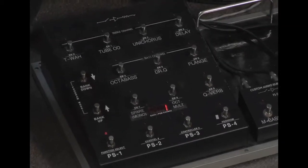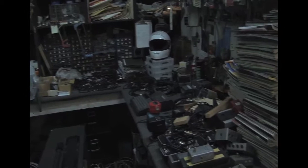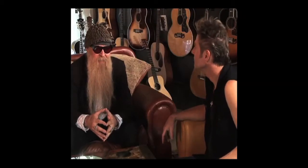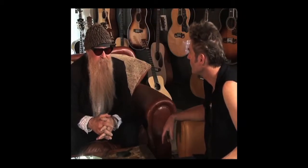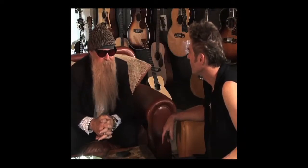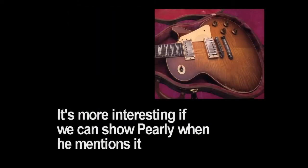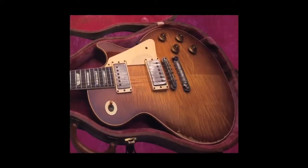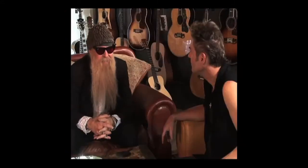B-roll is supplemental footage that helps tell the story and adds meaning to a sequence of shots. Here's an example of ZZ Top's Billy Gibbons talking about his famous Pearly Gates Les Paul. It's a lot more interesting if we switch to a close-up shot of Pearly so we can see what he's talking about, rather than maintaining a talking headshot of Billy.